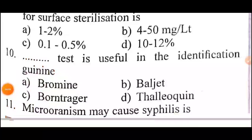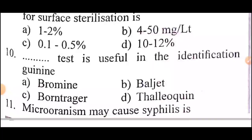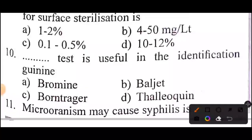Tenth question: DARS test is useful in the identification. Answer: Option D — Thallophyte/Gwayne.